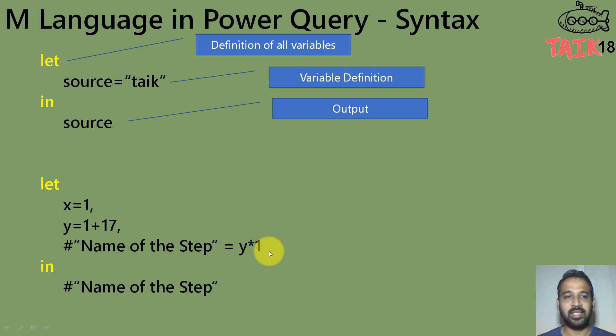Hash double quote, name of the step double quote. This represent, we can give the name of each and every step in Power Query. If you have any space, then we must have to include the hash double quote. And inside to that, we can give the name of the step and equal to y into one. So it means it will give return of 18 itself. And after the last step, we should not have to include the comma here and in the last is which step we want to return.